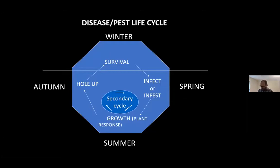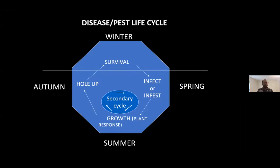This is a slide I borrowed from Eric Seidman. He uses it as a general pest and disease life cycle. It's good to think about how, over the winter, something is either overwintering here and surviving or it has a resting stage. Many of these diseases are fungal — some are bacterial, but most are fungal — and it has to be somewhere. Where it overwinters really dictates how it's going to become an issue in the spring or not.